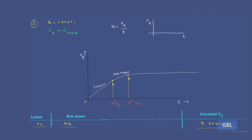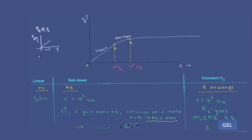Let's start with region O to A. In this region, drift velocity is proportional to electric field, so we get a linear region — as we increase the electric field, drift velocity also increases. Now, drift velocity relates to kinetic energy: for an electron, kinetic energy equals half m times vd squared. So in the O to A region, as electric field increases, the kinetic energy of the electron increases.